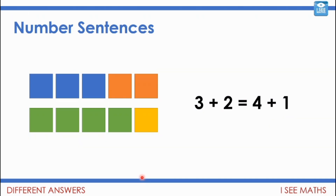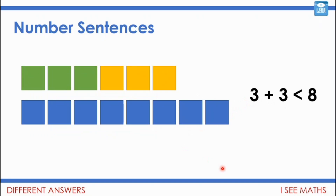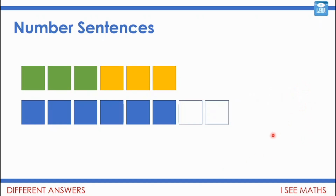This is a little recap from yesterday. We had a look at images like this one and said this is 3 plus 2, and this is 4 plus 1, and these are the same — they're equal because they're both 5. We also had a look at an example where 3 plus 3 is not the same as 8. In fact, 8 is more. So we use the sign to show which side is more. But if I do 8 subtract 2, then they are the same — both sides are 6. So the number sentence is 3 plus 3 equals 8 subtract 2, because both sides are worth 6.